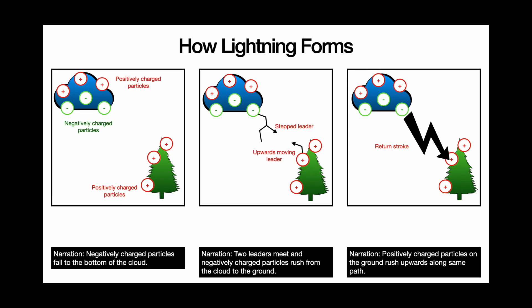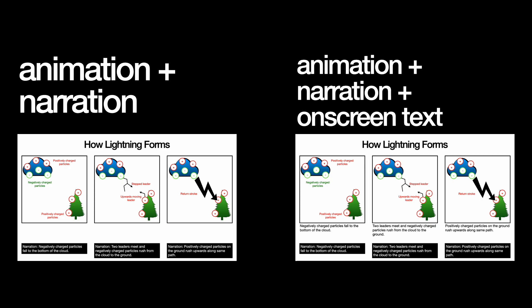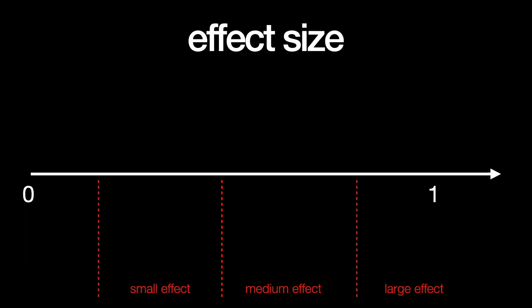The original set of studies on the redundancy principle involved a narrated animation on lightning, with one group of students presented with only animation and narration, and another with on-screen text added. The study showed that students who were presented with only pictures and narration did better, with relatively large effect sizes ranging from 0.72 to 1.21.